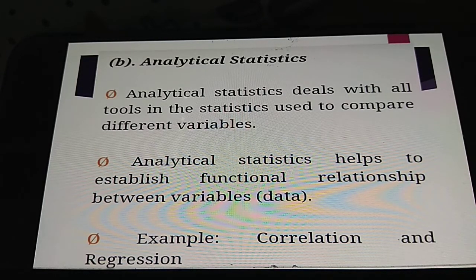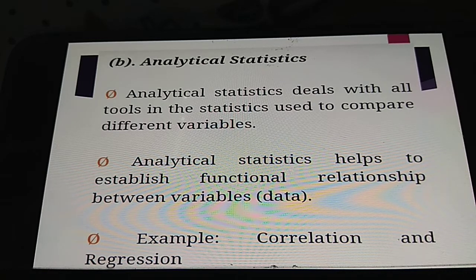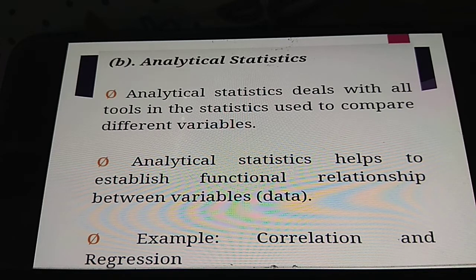Analytical statistics deals with all tools in statistics used to compare different variables. Analytical statistics helps to establish functional relationships between the variables. Correlation refers to the relationship between two variables, and regression refers to the relationship between more than two variables.